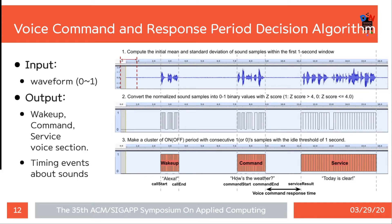Since the voice data is stored as a waveform between 0 and 1, the waveform data must be segmented into wake-up, command, and service voice sections. We calculated this with a three-step algorithm. First, we find the initial mean and standard deviation of the sound sample. Next, we transform the original sound sample into normalized d-squared values and convert them into binary 0 or 1. Finally, we make a cluster of sound samples with value 1 using a minimum idle threshold of 1 second. This threshold is a heuristic, but it worked well in our experiments.